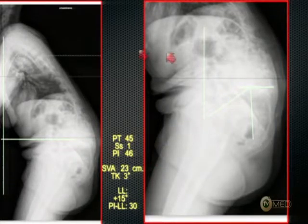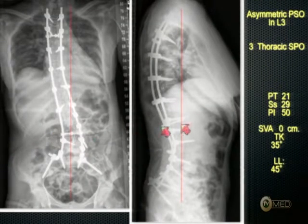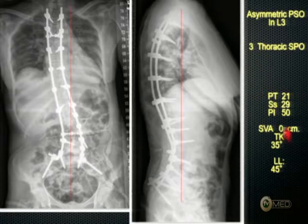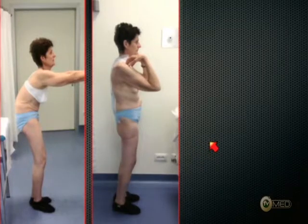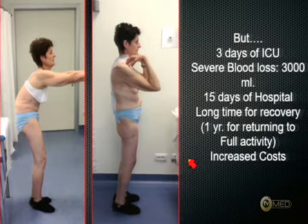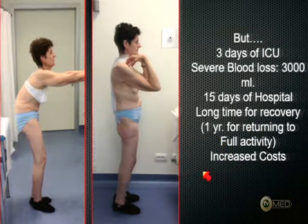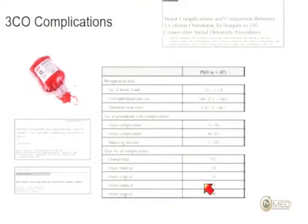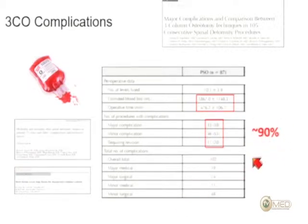If you look at a patient where all of these factors are very bad, you can achieve good realignment of the spine, but you have to do an asymmetric PSO at L3, three thoracic SPOs, and you gain these good results. The clinical shape changes, but it requires three days of ICU, severe blood loss of three liters, 15 days of hospital stay, and a long recovery — one year for returning to full activity — with increased cost for the community. The complication rate of revision osteotomy is so high — sometimes close to 90%.